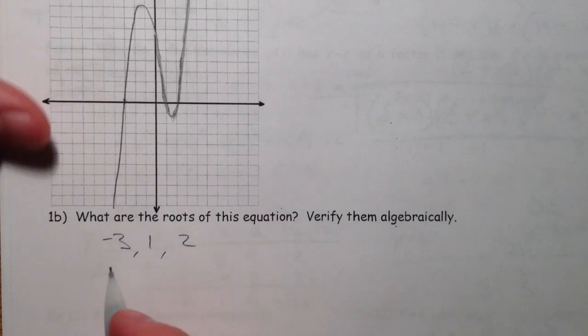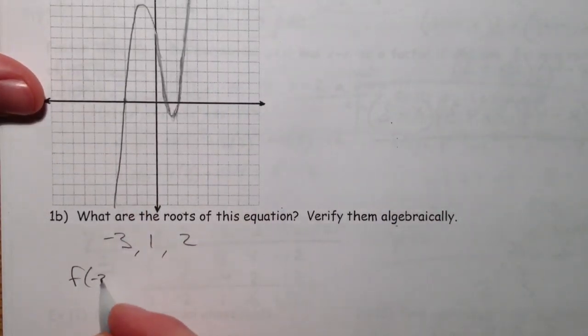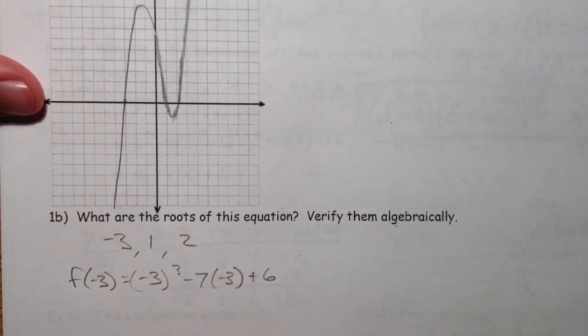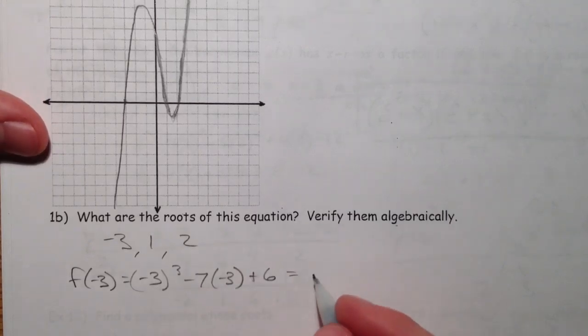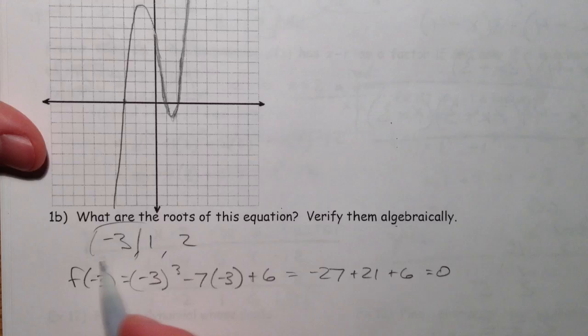What I'm going to do is, I'm going to plug negative 3 in, f of negative 3. Negative 3 cubed minus 7 times negative 3 plus 6. That's negative 27 plus 21 plus 6 equals 0. So, negative 3, verified.